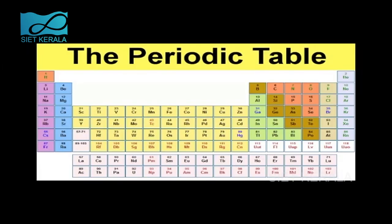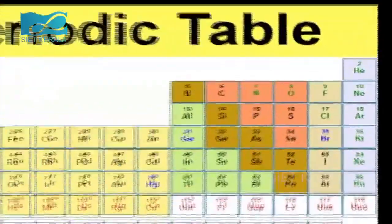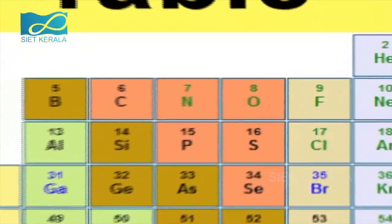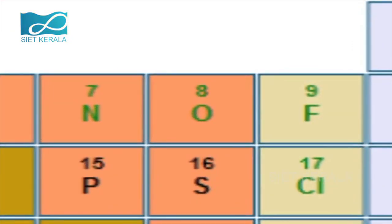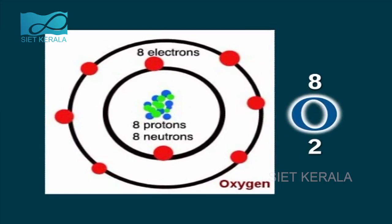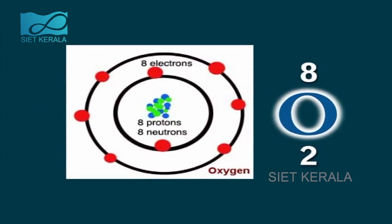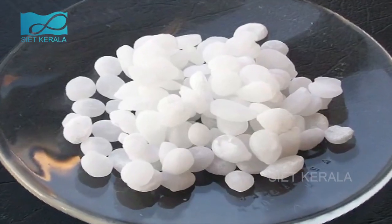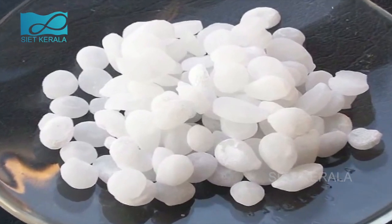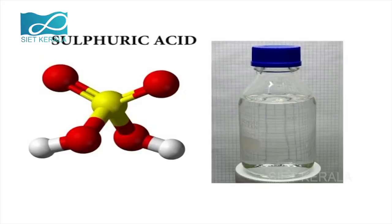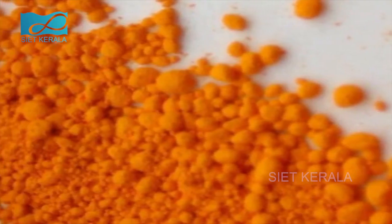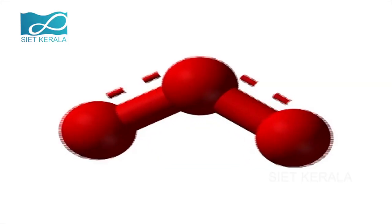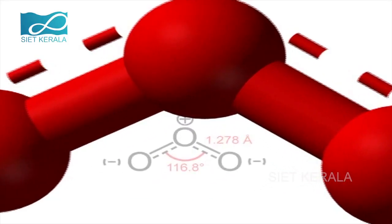Oxygen is the 16th group element in the periodic table. The atomic number of oxygen is 8 and its valency is 2. Oxygen is mainly seen in compounds such as water, nitric acid, sulfuric acid, mercury oxide, and ozone.